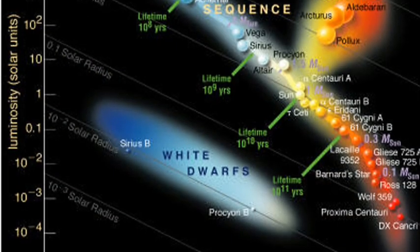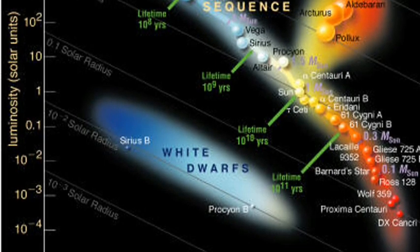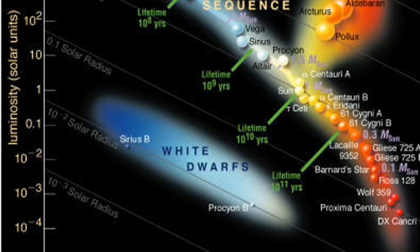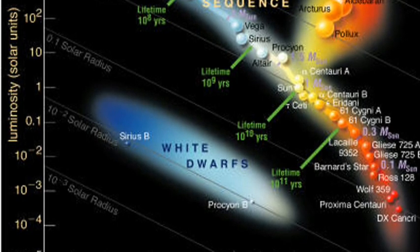This is an example of an HR diagram. There are many different stars in our galaxy: main sequence stars like our sun, blue stars, white dwarves, giants and super giants, and red dwarves.